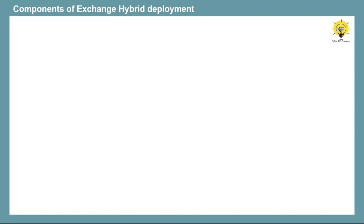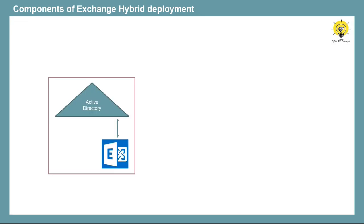Exchange Hybrid deployment includes five components. The first component is Exchange Server. If you want to deploy Exchange Hybrid, you need at least one Exchange Server in your environment. If you have Exchange 2016 or 2019, you need at least one mailbox server. And if you have Exchange 2013 or earlier versions, you need at least one mailbox server and one client access server. The second component is Office 365 tenant, which is a cloud-based subscription model, also called Software as a Service, where you use services based on your purchased subscription.